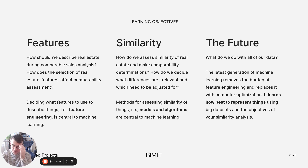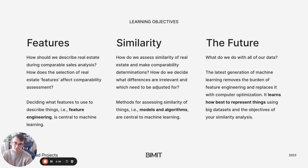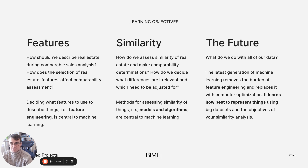So let's focus on two key concepts: features and similarity. Features are important for comps because they are how we describe and represent properties — location, size, age, number of bedrooms. What happens when we include a feature? What happens if you remove or ignore a feature? The whole analysis changes. And much like comps, deciding what features to use to describe things is central to machine learning.